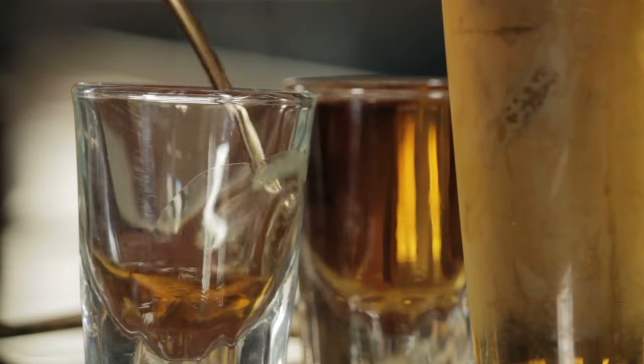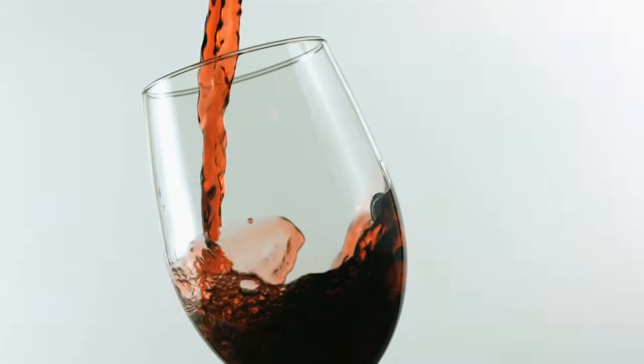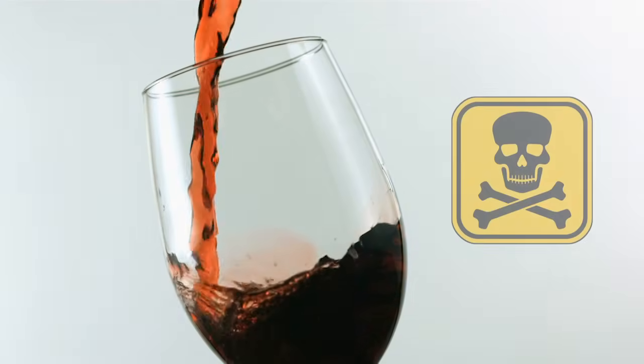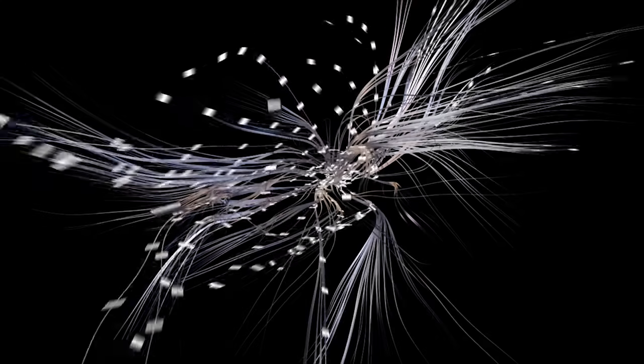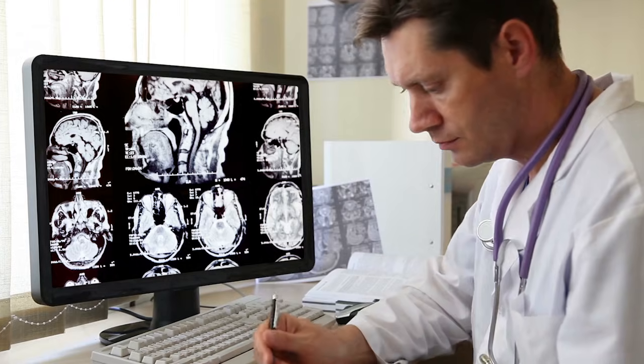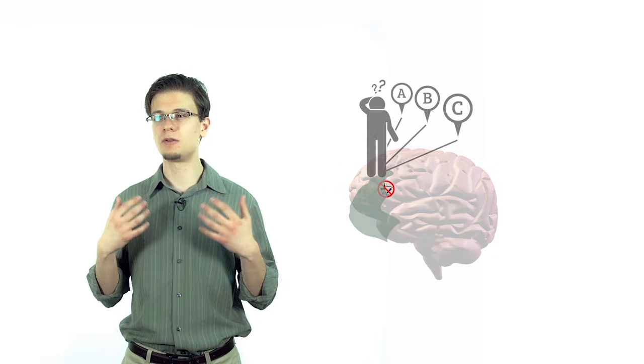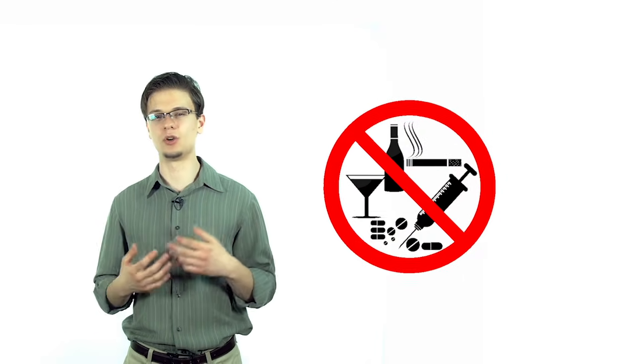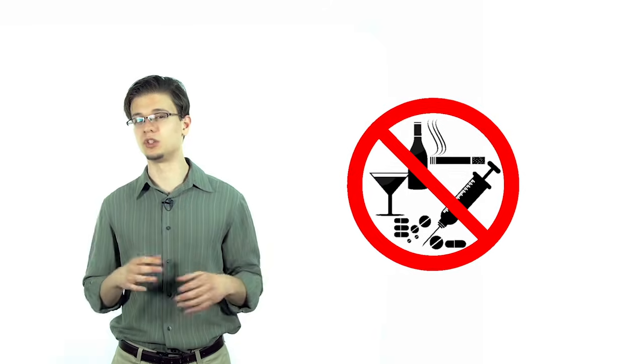So this begs the question: if drugs and alcohol can be so dangerous to the nature of the brain that it completely rewires it into a repeated pattern of use, why not just stop? Why doesn't the prefrontal cortex actually make the executive decision that drugs and alcohol are not good and we should cease using?